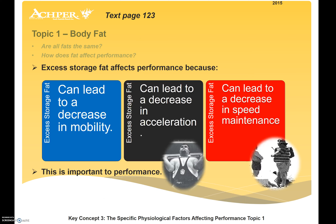First, looking at body fat. The questions we're going to ask ourselves are: are all fats the same, and how does fat affect our performance? We have to appreciate that excess storage fat will affect our performance because it can lead to decreased mobility, a decrease in acceleration due to dead weight, and a decrease in speed maintenance. When looking at weight ratios, a high percentage of muscle contributes to power and acceleration, whereas fat is just dead weight - it's not contracting, not relaxing, not helping any movement.